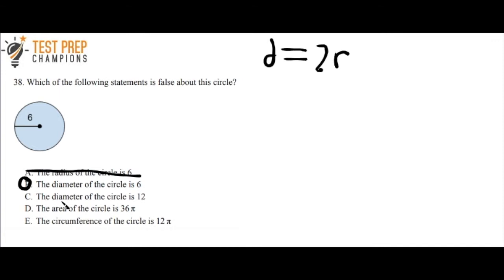Answer C says the diameter of the circle is 12. That's correct because the diameter equals twice the radius. If we know the radius is 6, which the picture shows us, we just do 2 times 6, which equals 12. So we can cross that off.